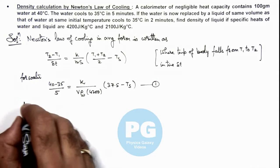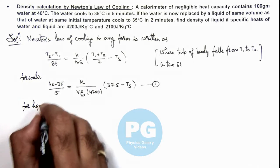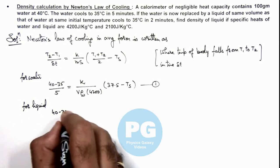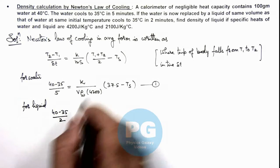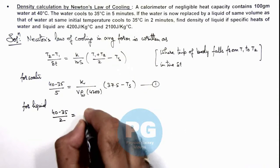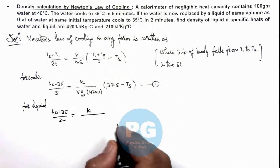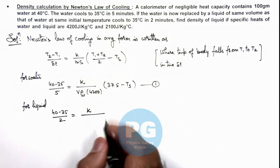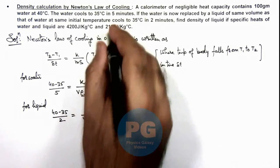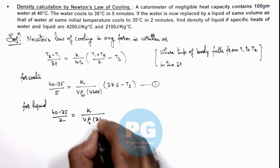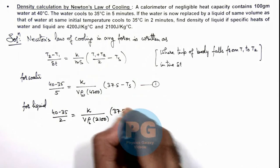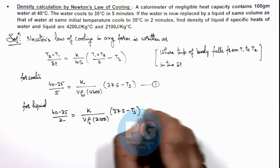Similarly, now if we write the equation for liquid, this is given as 40 minus 35 by 2, because the liquid cools to the same level in 2 minutes. This is equal to k divided by, as we have taken the same volume, we can write V multiplied by rho of liquid, multiplied by specific heat of liquid which is given as 2100, multiplied by 37.5 minus Ts. That is equation 2.